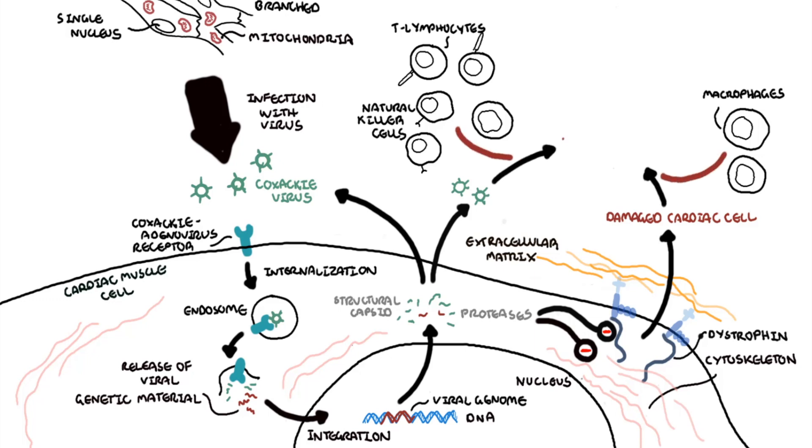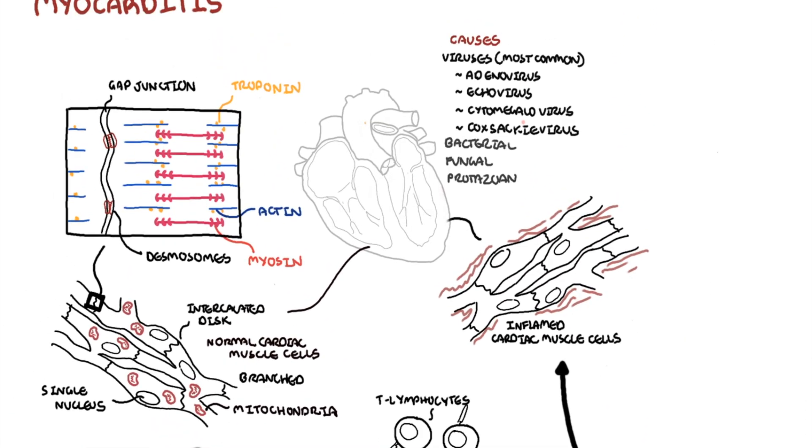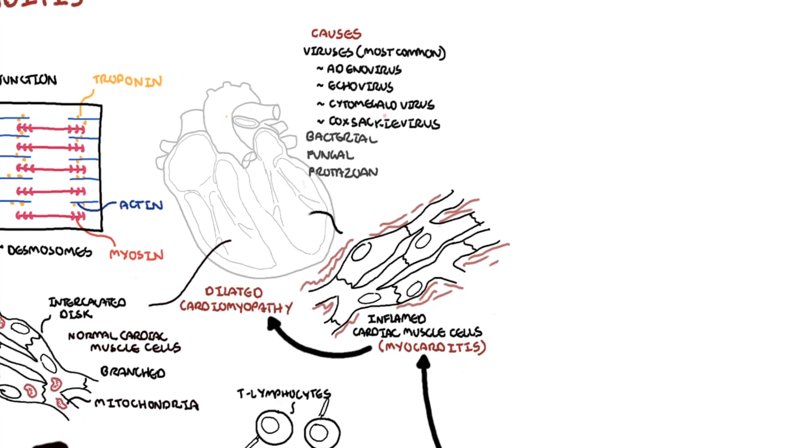The immune activation contributes to the progression of myocarditis, and this can lead to dilated cardiomyopathy, which is where the ventricles become dilated, reducing, thus impairing heart contractility, and so impairing cardiac output.